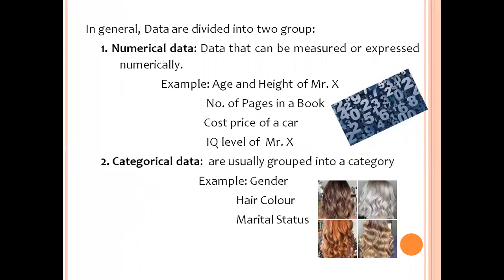In general, there are two types of data. One is called numerical data, where the data collected are expressed in the form of a number. For example, the age and height of Mr. X — his age is 30 years old and his height is 5.2. The number of pages in a book might be 200. The cost price of a car might be 5 lakhs. The IQ level of Mr. X might be 95. These are all numerical data.